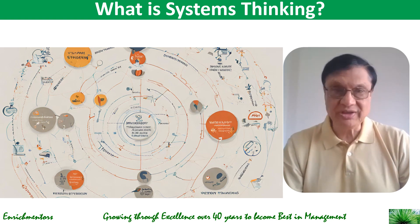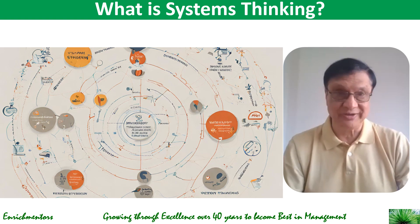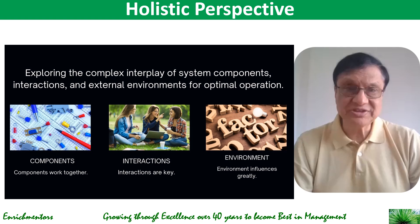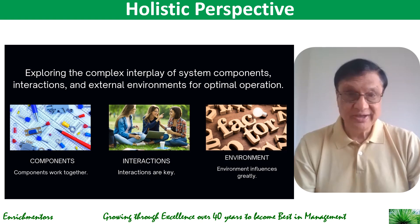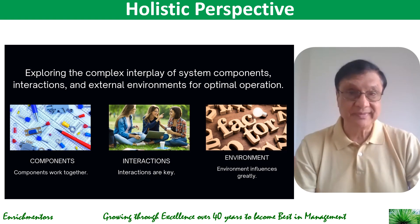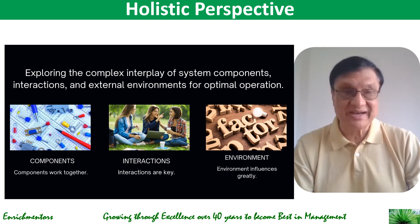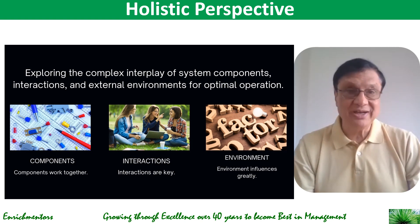What are the key aspects of systems thinking? First, systems thinking takes a holistic perspective. It considers the entire system — the components that work together, the interactions that are key, and the environment in which it operates and which influences the working. It is about exploring this complex interplay of components, interactions, and the external environment for optimal operation.